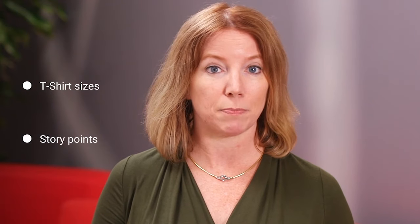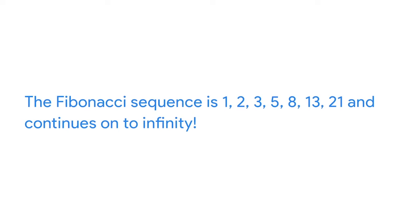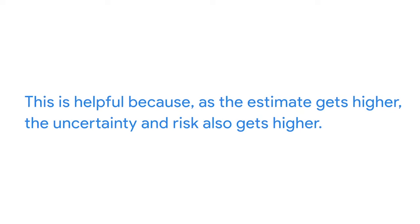My favorite estimation method is story points. Story points are a bit more advanced than t-shirt sizes but the concept is similar — the team picks an anchor item and conducts estimations relative to it. Instead of t-shirt sizes, this process uses a famous mathematical sequence called the Fibonacci sequence: 1, 2, 3, 5, 8, 13, 21, and continuing to infinity. These numbers start close together but spread farther apart as they get higher. This is helpful because as the estimate gets higher, the uncertainty and risk also get higher. The number combines both effort and risk — there's not much use debating between 21 and 25 points, but choosing between 21 and 34 is a real conversation.